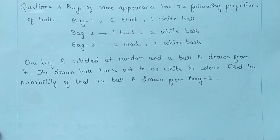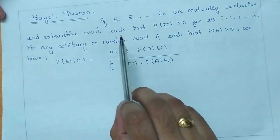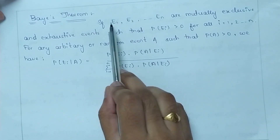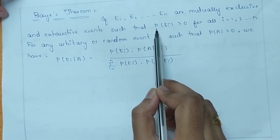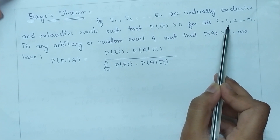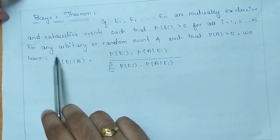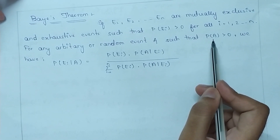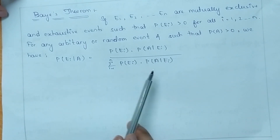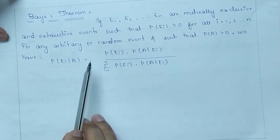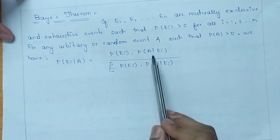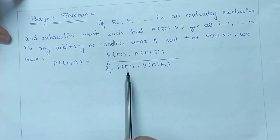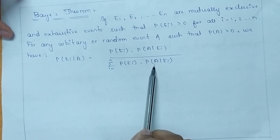Before going to the solution, let us know what Bayes' theorem states. According to Bayes' theorem, if events E1, E2 up to En are mutually exclusive and exhaustive events such that probability of occurrence of any one event is greater than 0 — that is, P(Ei) > 0 for all i = 1, 2, 3 up to n — then for any arbitrary event A such that P(A) > 0, we have the formula: P(Ei | A) = P(Ei) × P(A | Ei), divided by the summation of P(Ei) × P(A | Ei).